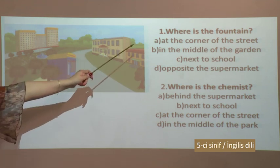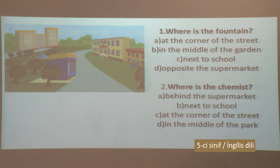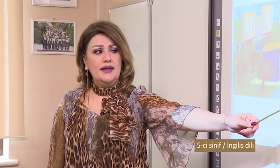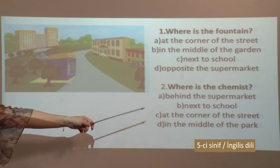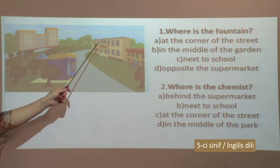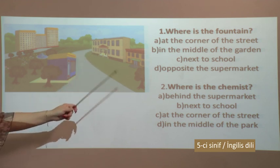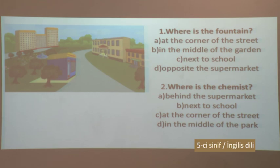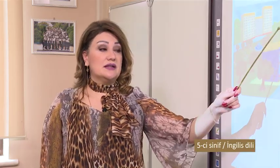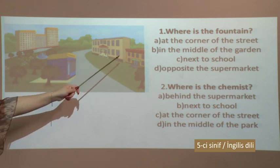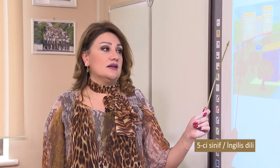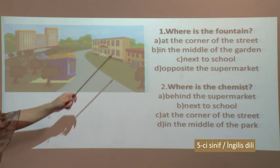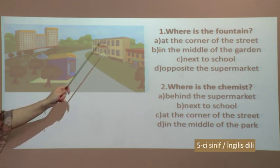The second question: Where is the chemist? A - behind the supermarket - this is a supermarket, and the chemist is not behind it, so A is incorrect. B - next to school - this is a school, and it may be the correct variant. C - at the corner of the street - the chemist is not at the corner, so C is also incorrect. D - in the middle of the park - the chemist is not in the middle of the park. Therefore the correct variant is B - it is next to school.